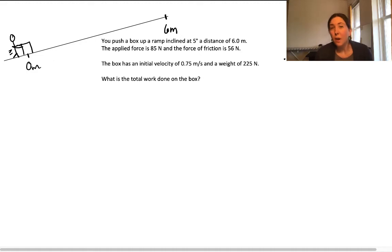Dr. P here. I wanted to go over a quick example of finding the total work or the net work done on an object. Here I am pushing a box up a ramp that's inclined at 5 degrees. This will be theta and it will be 5 degrees.